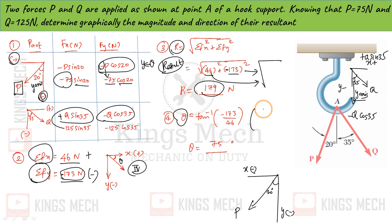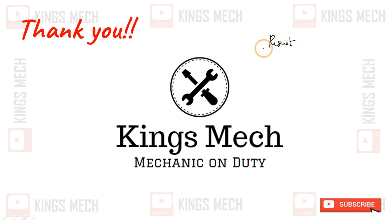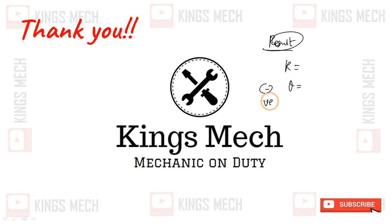Theta equals tan inverse of (ΣFy divided by ΣFx), and I am getting a value of around 75 degrees. So the resultant is approximately 179 N at 75 degrees. We can verify this against the book-back answer — the magnitude of the resultant and its direction.